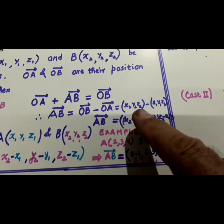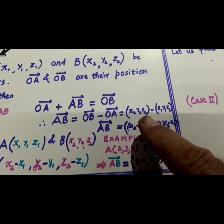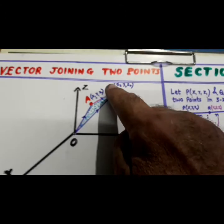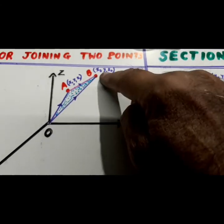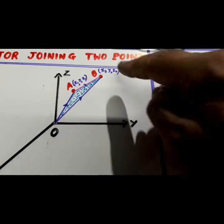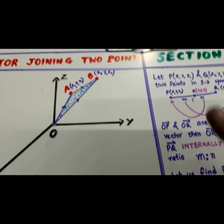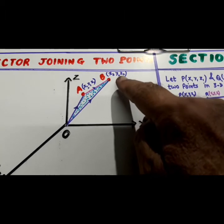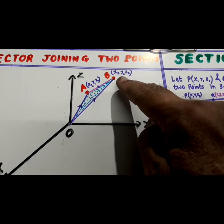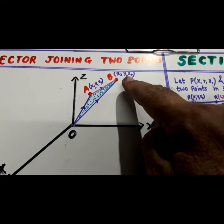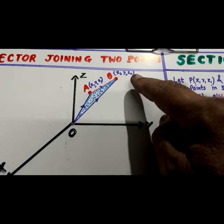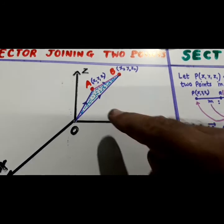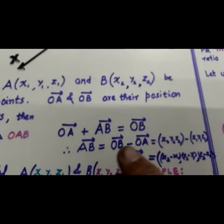And OB is your X2, Y2, Z2. OB is your X2, Y2, Z2. This vector. This can be written as X2, Y2, Z2 or it can also be written as X2 i cap plus Y2 j cap plus Z2 k cap.